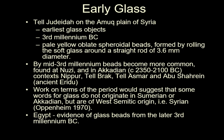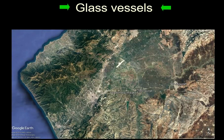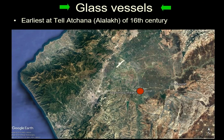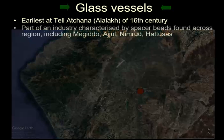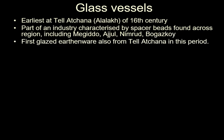In Egypt, we have evidence of glass beads from the later 3rd millennium B.C. Glass vessels — earliest evidence at Alalakh, which is here, very near Tayanat, which is quite well-known in University of Toronto circles. You can see how this entire region seems to be very, very big on making glass. This is part of an industry making beads. They also made the first glazed earthenware in this period.